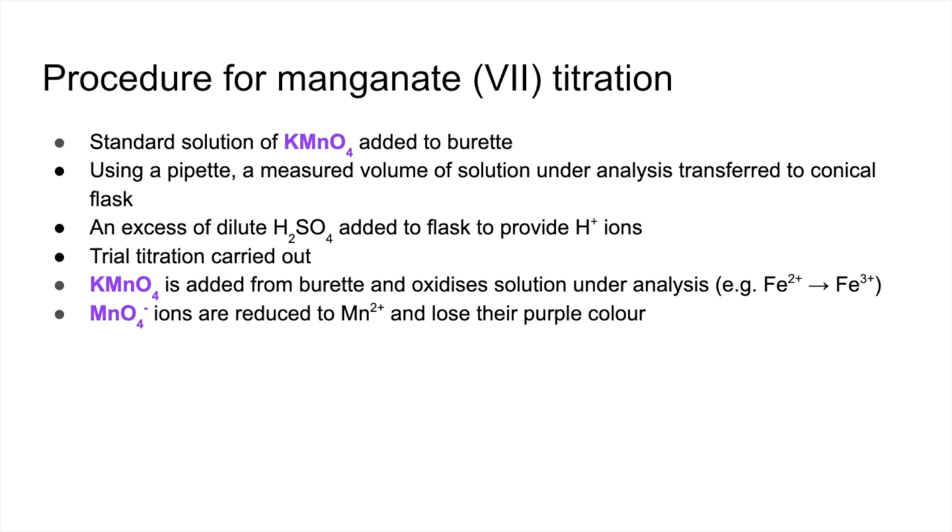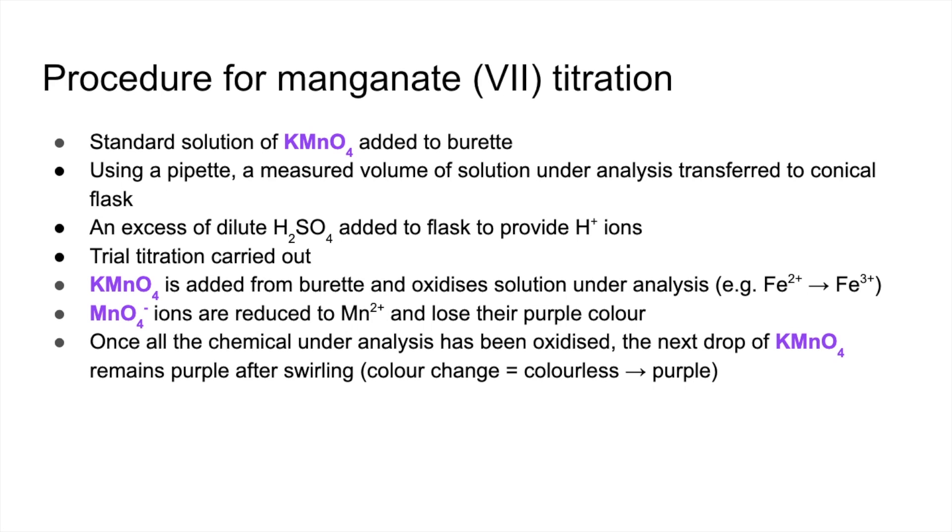As the KMnO4 reacts, the ions, the MnO4- ions, are reduced to Mn2+ and they lose their purple color. Once all the chemical under analysis has been oxidized, so in other words once all that Fe2+ is gone, the KMnO4 has got nothing left to react with, so the next drop of that stays purple after swirling. So the color change would be colorless to purple.